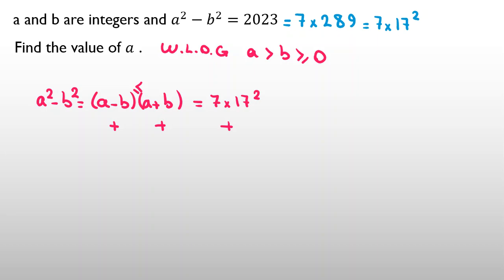We can say (a-b) ≤ (a+b) because a-b is non-negative and a+b is positive. If I want to write the cases: one case is 1 and 7×17² which equals 2023. If a-b is 7, then a+b will be 17². If a-b is 17, it will be 7×17.